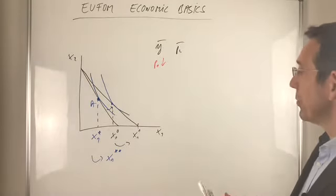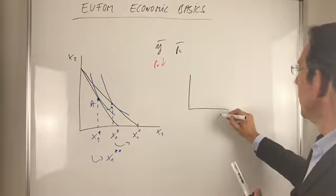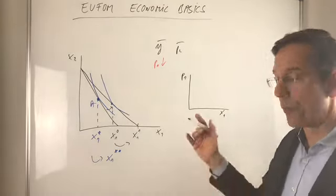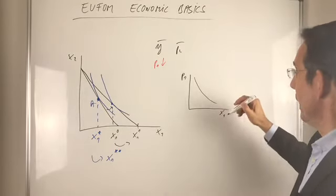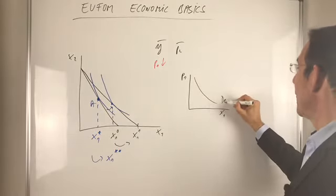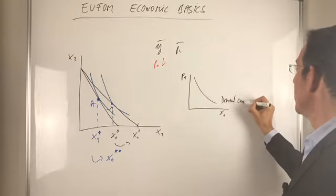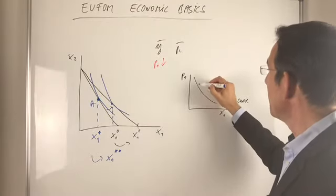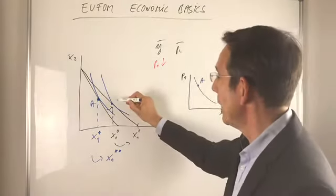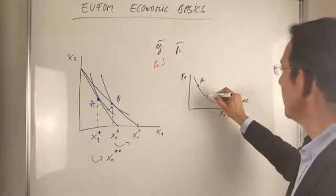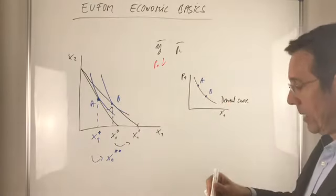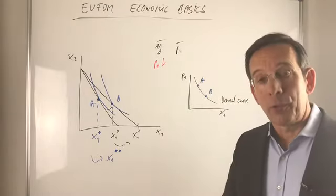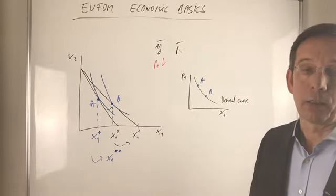And if we now translate that into another diagram, in a diagram with the price of good one on the vertical axis, you can immediately see we end up with the downward sloping demand curve. So for a higher price, that's point A, and for the lower price, that's point B, which is then the optimal choice. So the demand curve reflects optimal choices.